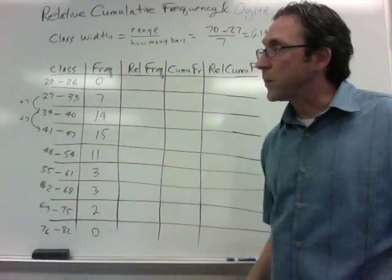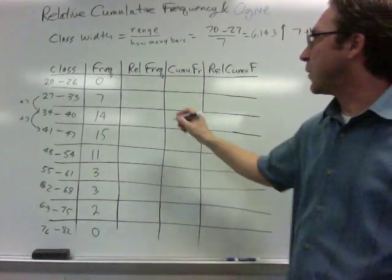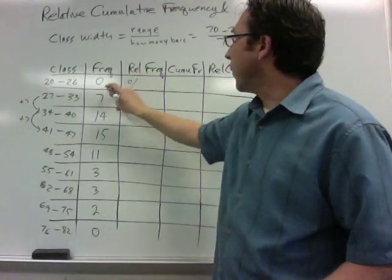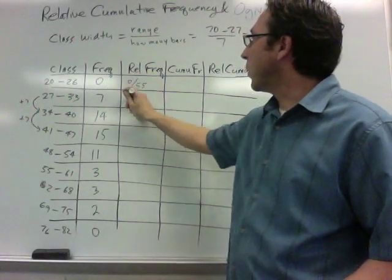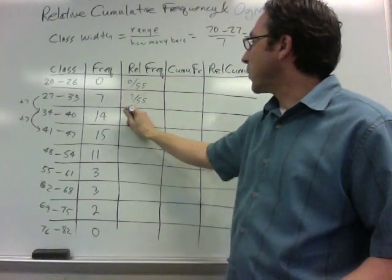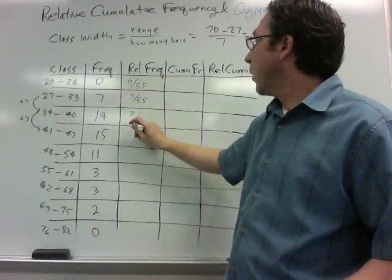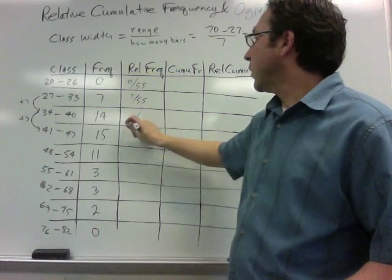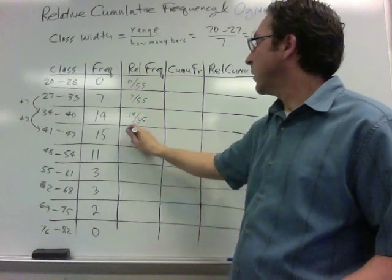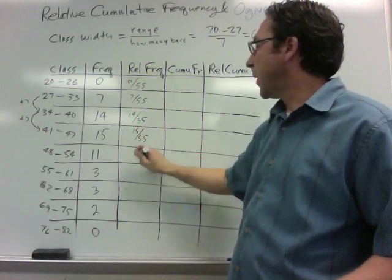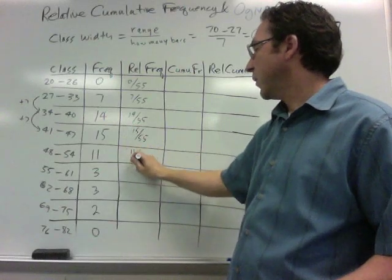Once you have the frequency set up, the relative frequency is easy to determine. It's just the number in the frequency divided by the grand total. So you can write those as fractions. You can also write those as percents. If you write them as a fraction, they're exact, which is nice.